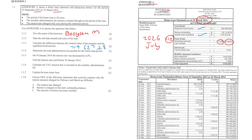Question 1.1.4: Determine the total administration fee payable for the whole loan period. The monthly administration fee is R5.70, so that's R5.70 times 12 months a year, and the period of the home loan is 20 years. So 5.70 × 12 × 20 = R1,368.